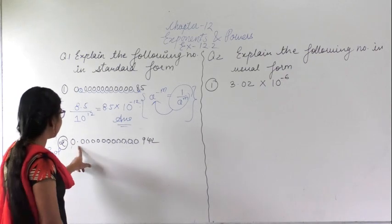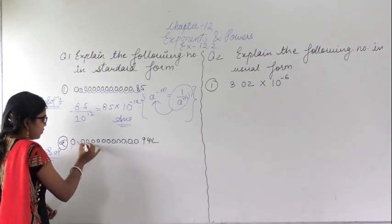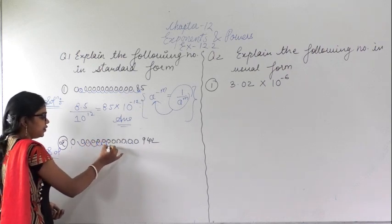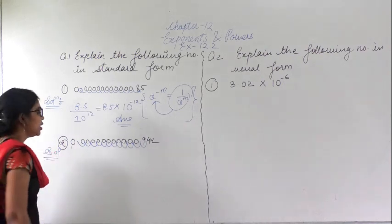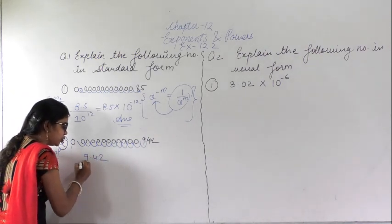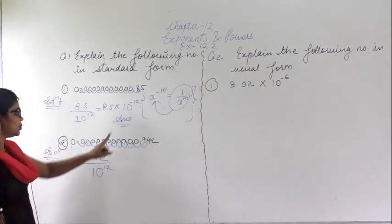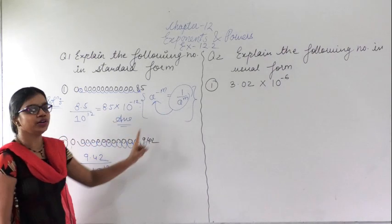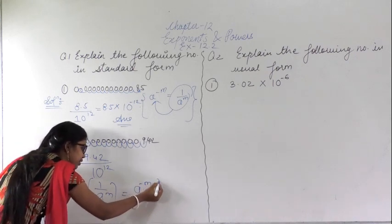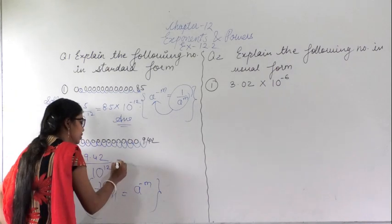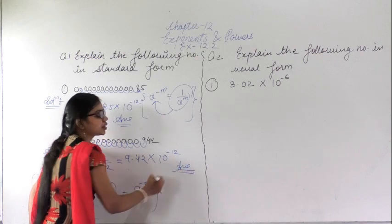Similarly, for the second number, the decimal is placed here and I want to move it to a new position. Counting the digits: 1, 2, 3, 4, 5, 6, 7, 8, 9, 10, 11, 12. I place the decimal after 9.42, so I can write this as 9.42 divided by 10 to the power 12. Using the law that 1 upon a to the power m equals a to the power minus m, I can write this as 9.42 into 10 to the power minus 12. This is the answer in standard form.